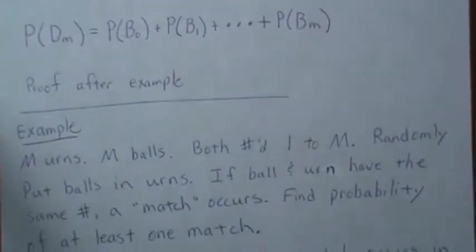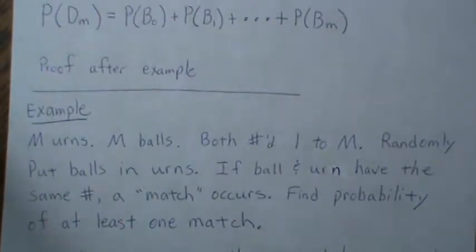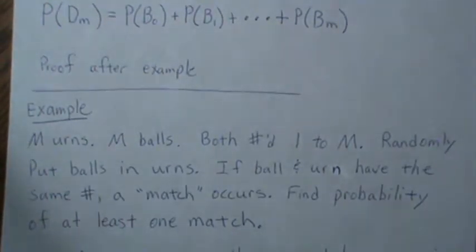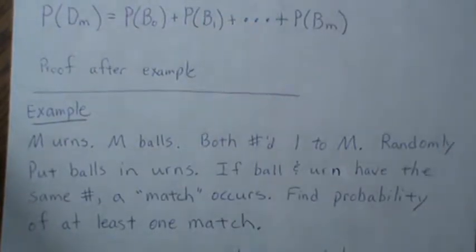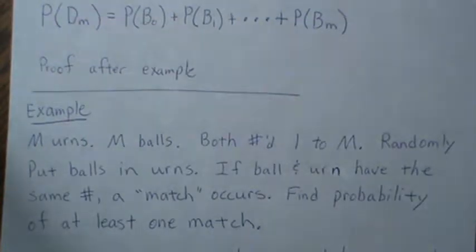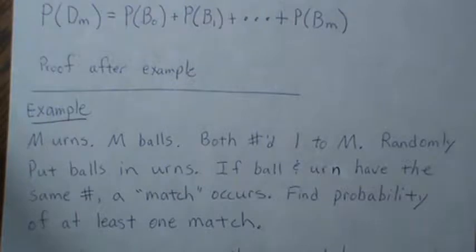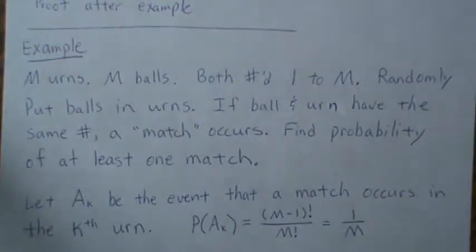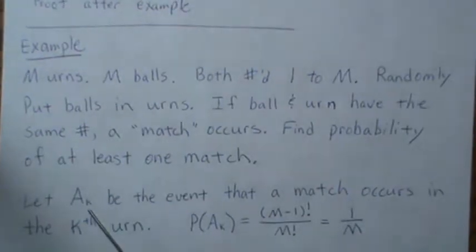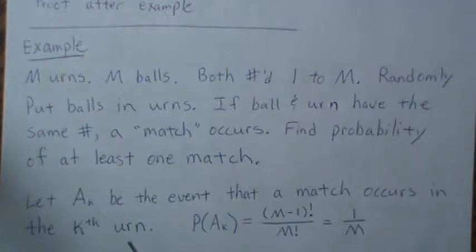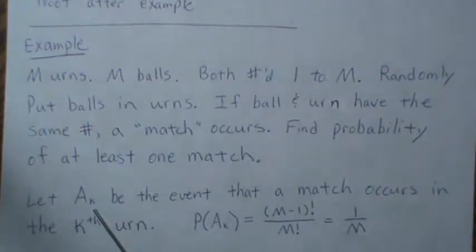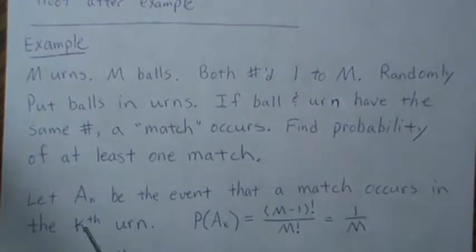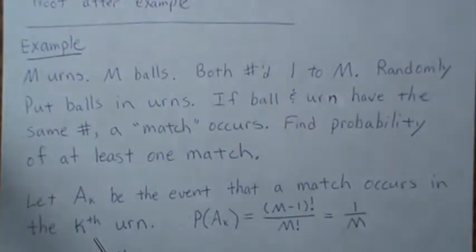The example is this: we have M urns and M balls, both numbered one to M. We're going to randomly put balls in these urns, one ball in each urn. If a ball and urn have the same number, a match occurs. We want to find the probability of at least one match occurring. We're going to let A_K be the event that a match occurs in the K-th urn. Notice that we're not saying anything about the other M minus one urns, whether there is or is not a match — this is specifically the K-th urn. That's an important distinction in this theorem.